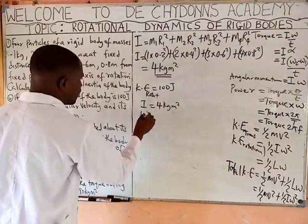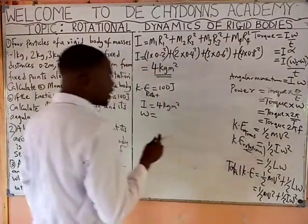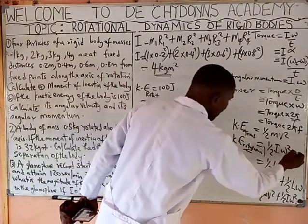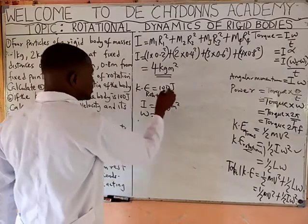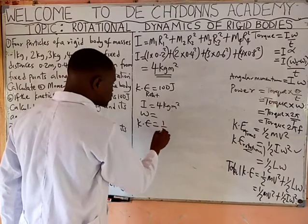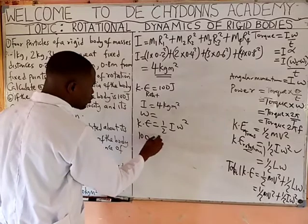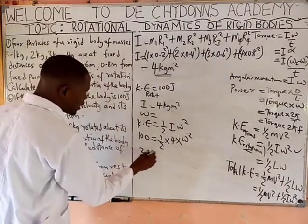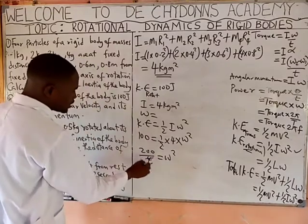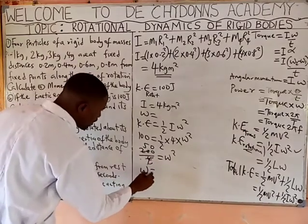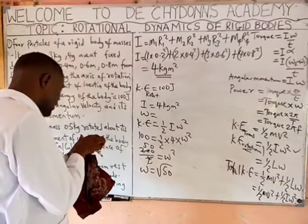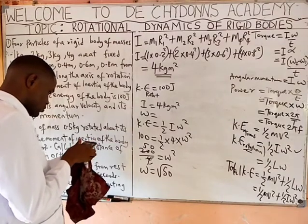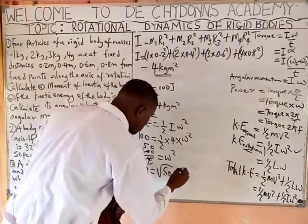We want to get the angular velocity. Look at the formula for kinetic energy of rotation that has KE, moment of inertia, and angular velocity. We say KE equals one over two Iω². So 100 equals one half times 4 times ω². That gives 200 over 4 equals ω squared, which is 50. So ω equals the square root of 50, which is 7.07 rad per second.